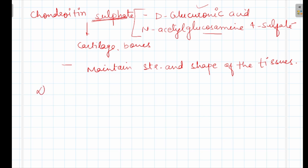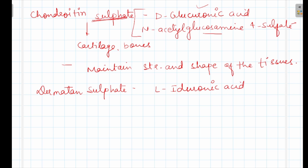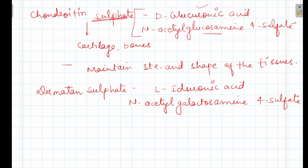One more is dermatan sulfate. It is made up of L-iduronic acid (acid sugar) and N-acetyl galactosamine-4-sulfate (amino sugar). In chondroitin, it was glucosamine; in dermatan, it is galactosamine. In chondroitin, it was glucuronic acid; in dermatan, it is iduronic acid. Dermatan sulfate is found in blood vessel valves, like heart valves. Its function is the same — to maintain the shape of the tissue.